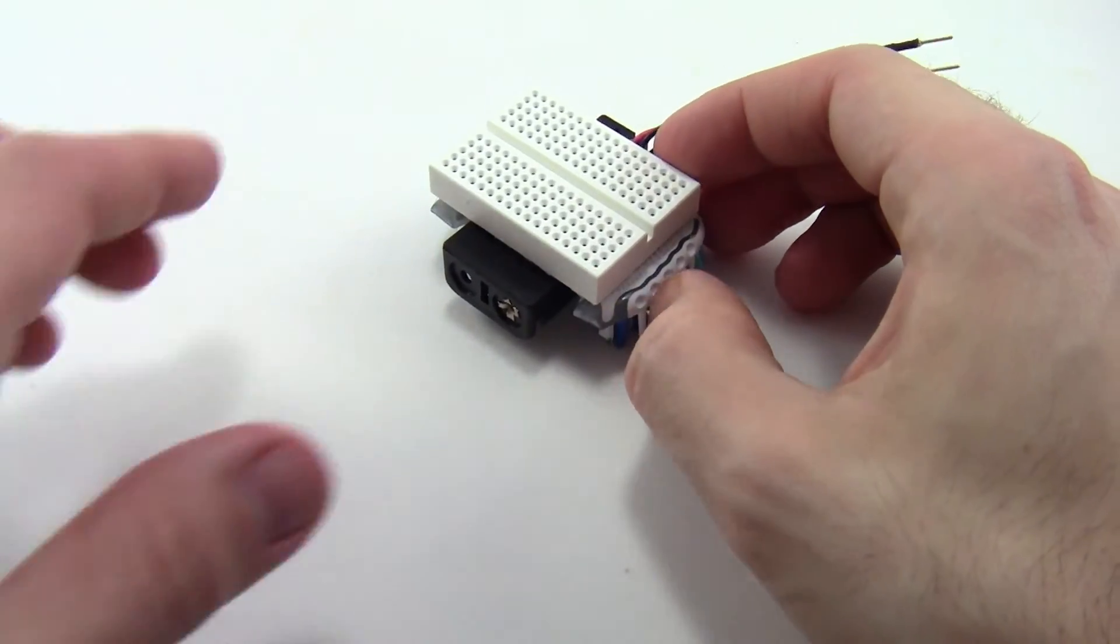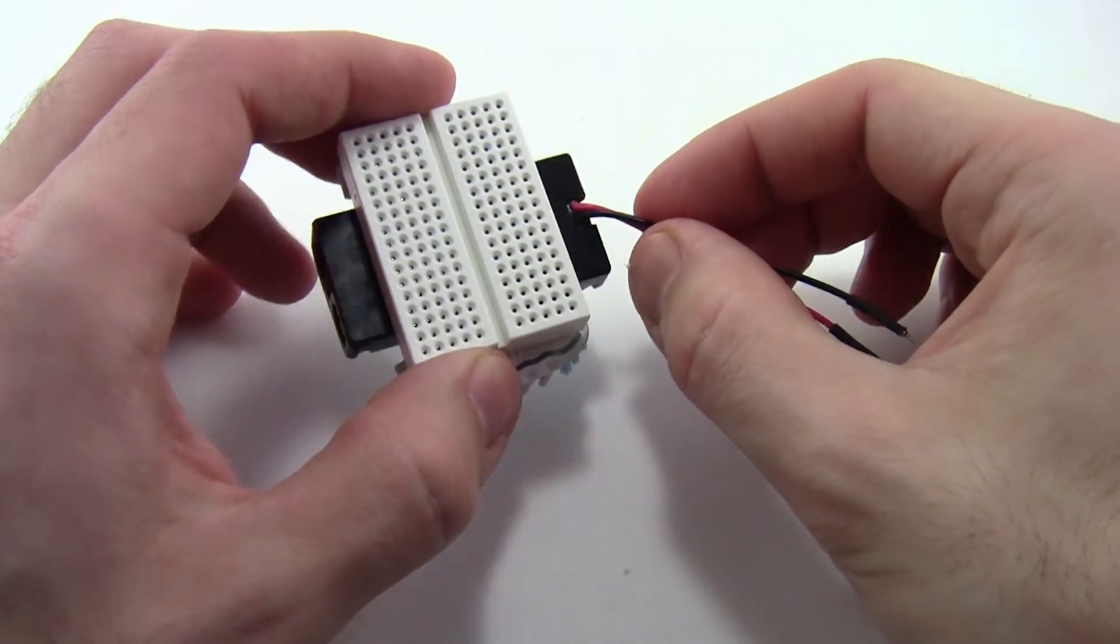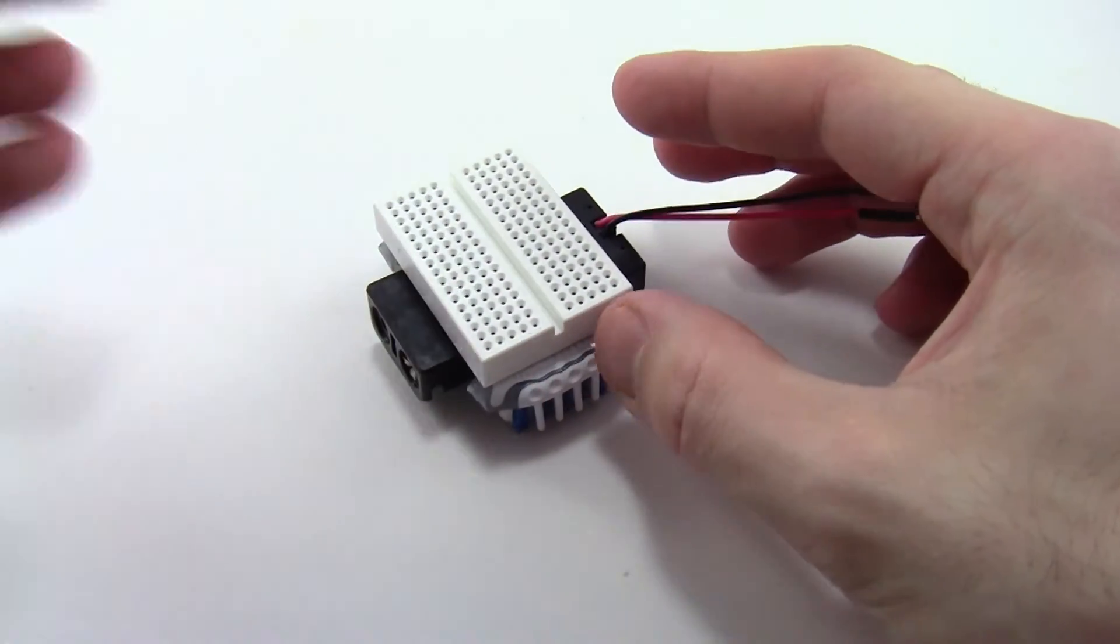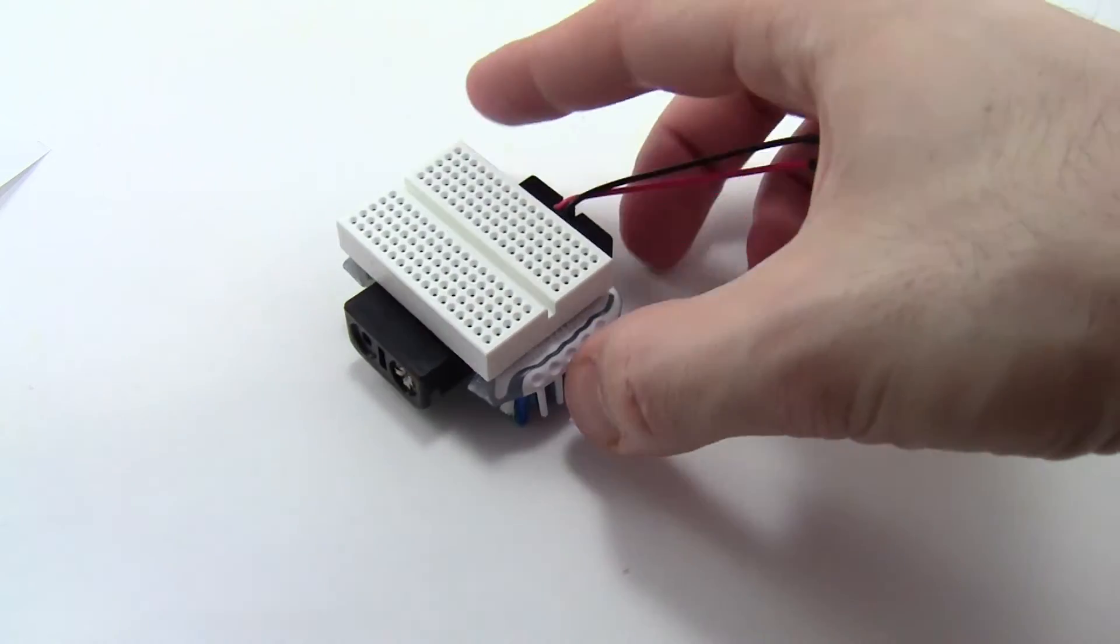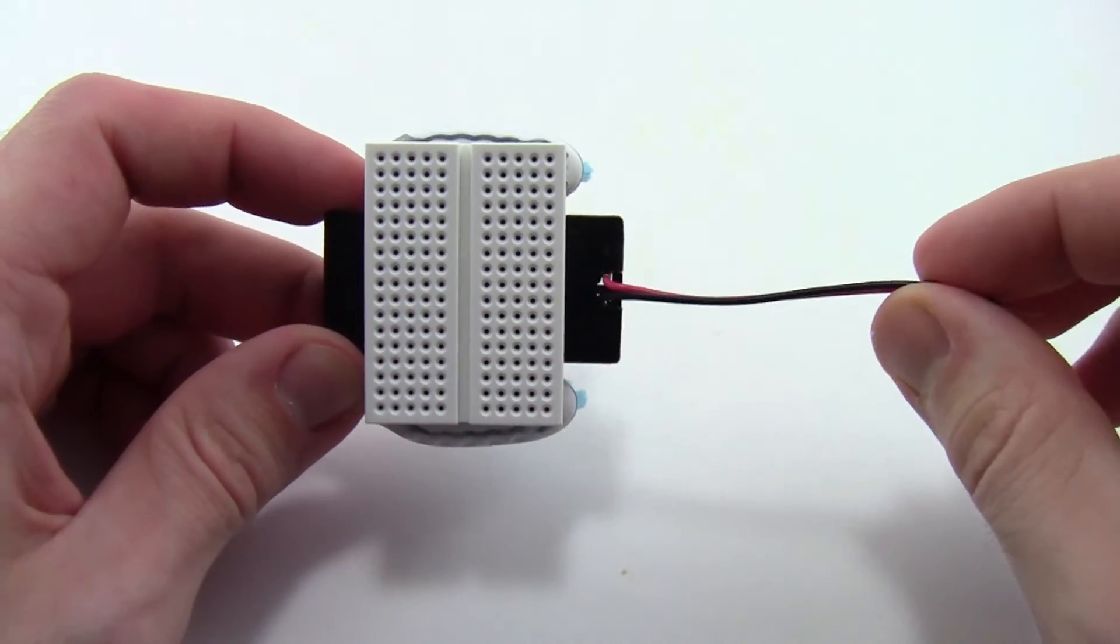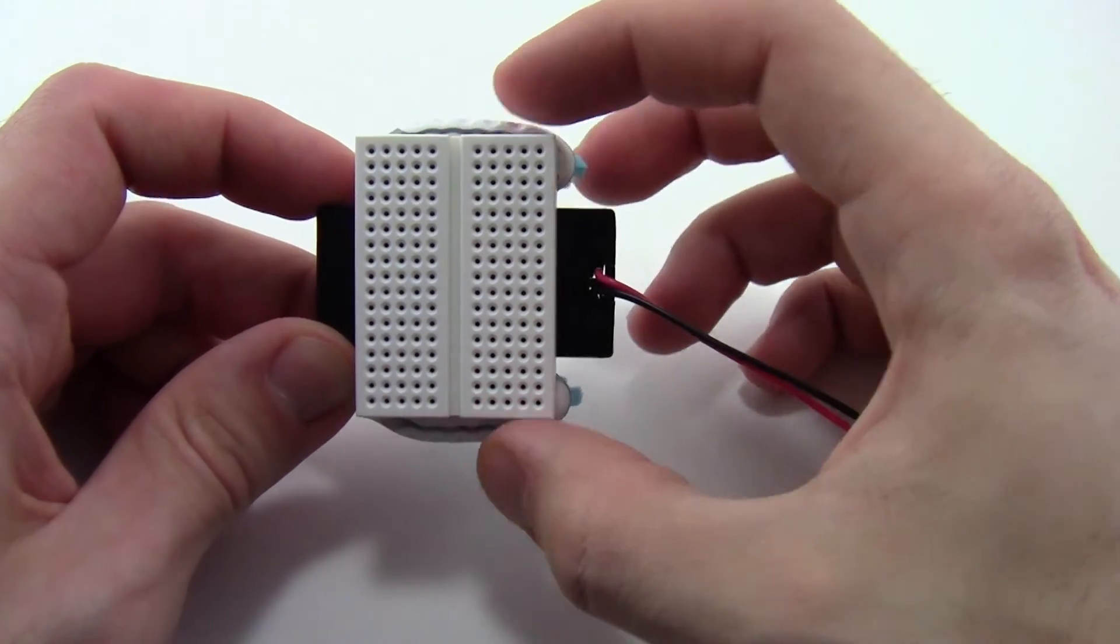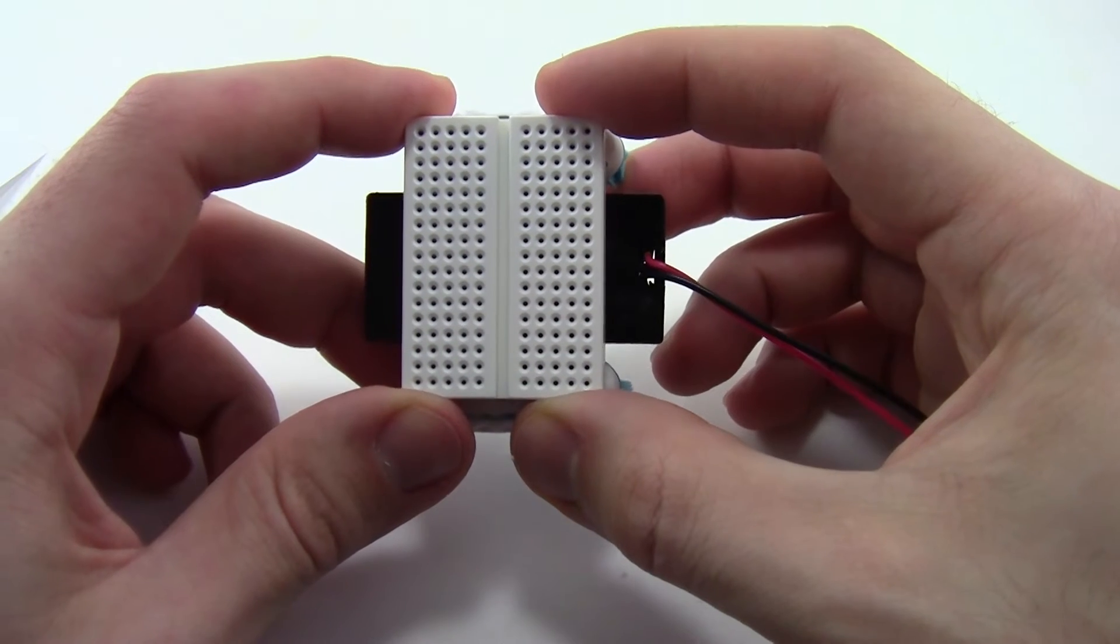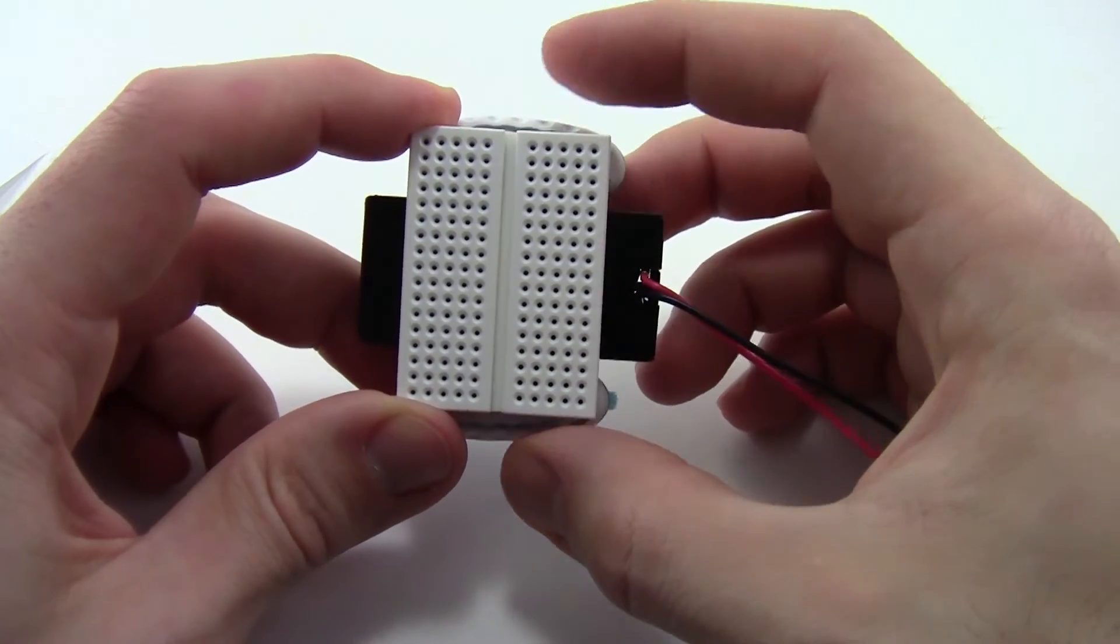The next thing, again, you can prepare this in advance based on how much time you have and then hand this part to the students and let them build the circuit. And when you build the circuit, you want to hold the robot in this orientation so the battery pack wires are on the right. And then that will correspond to the diagrams for building the circuit that you'll see in this video and in the accompanying PDF handout.